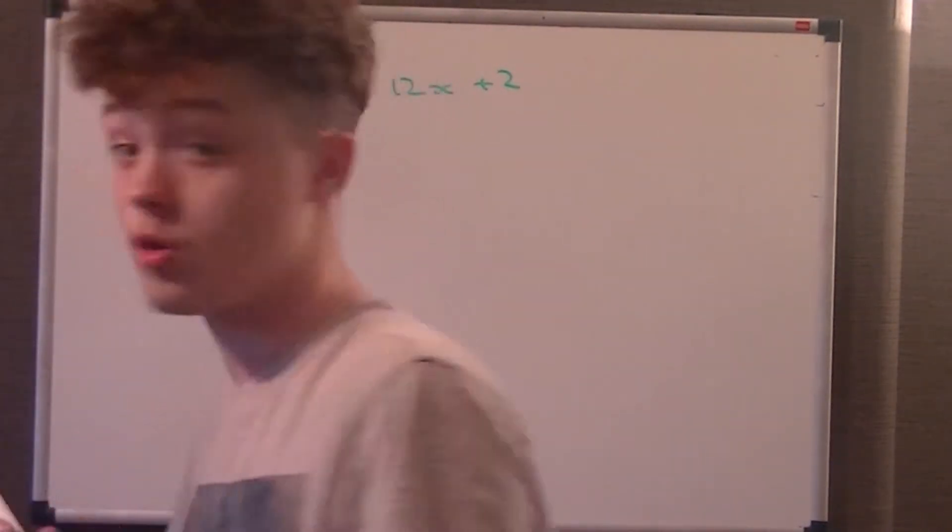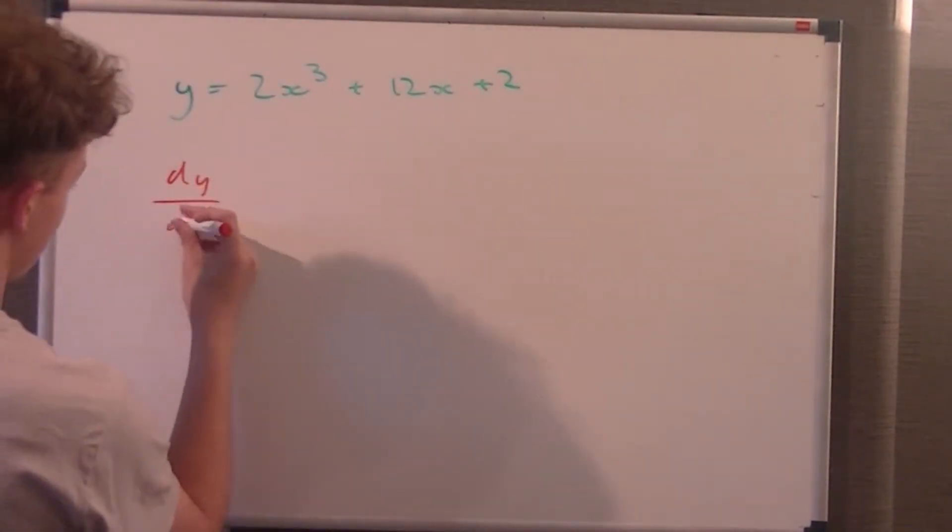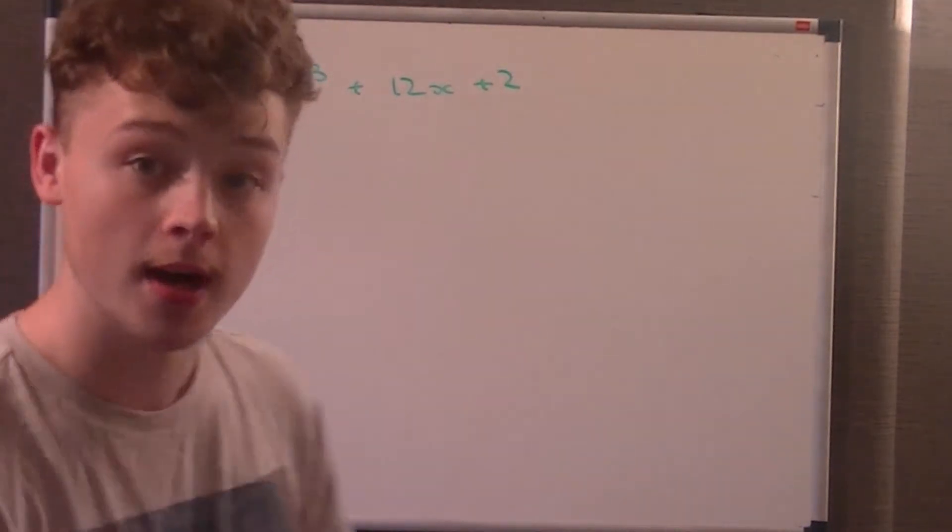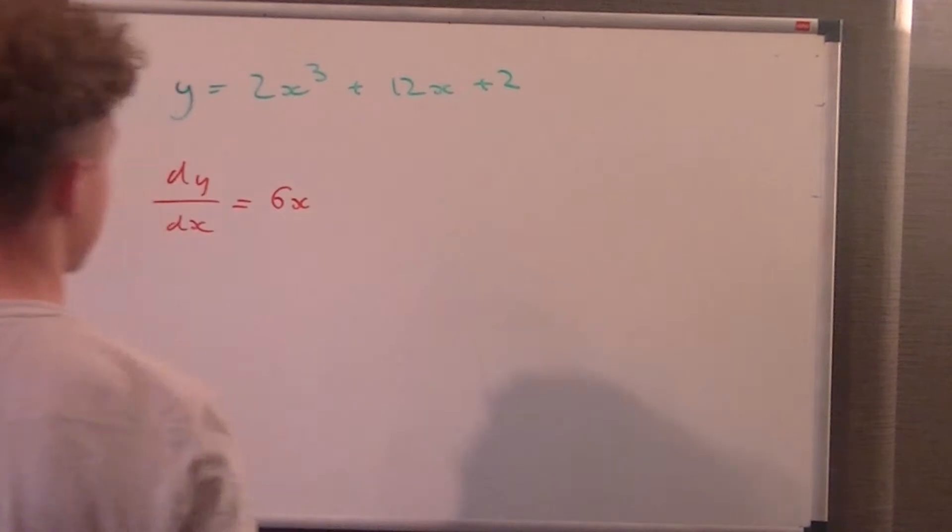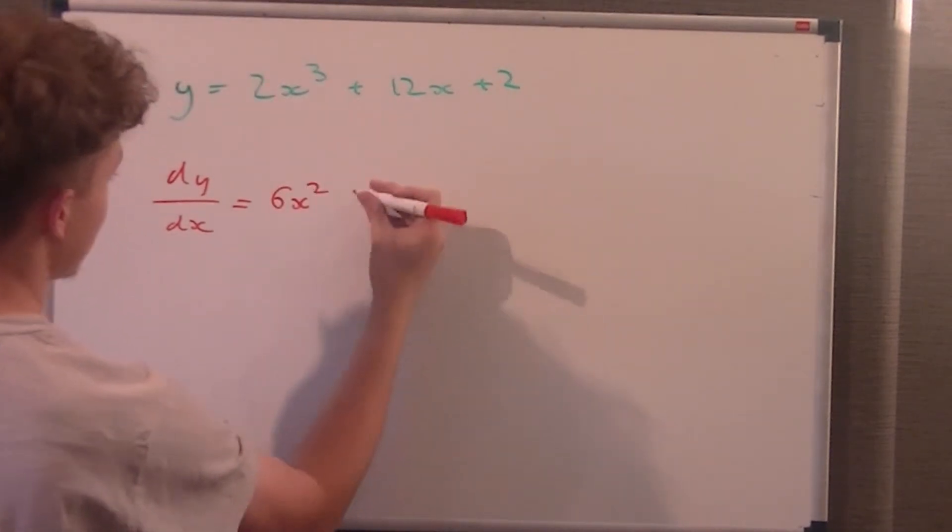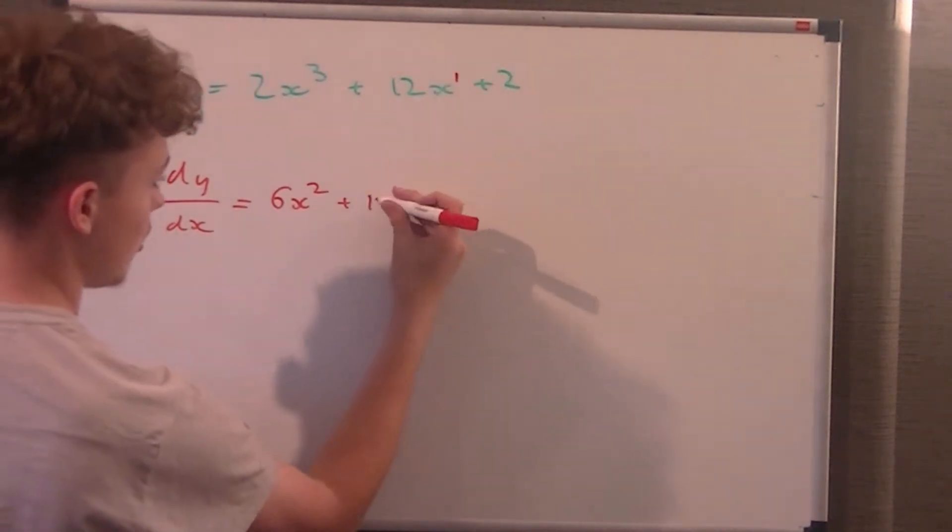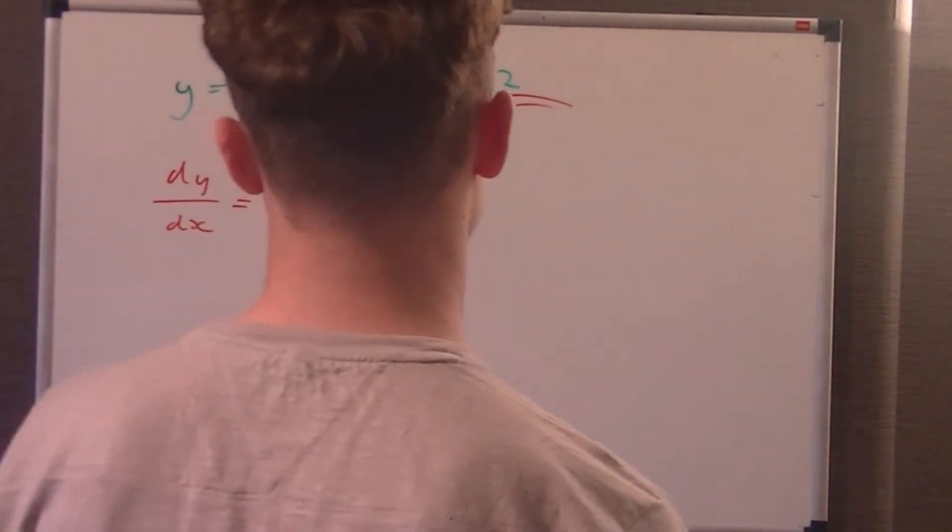We do dy/dx, so that's the formula you put in. What we do is we times the power by the coefficient, so 2x cubed, 3 times 2 is 6. We decrease the power by 1, so it becomes 6x squared. We follow this method on, so there's an invisible 1 here, so 12 times 1 is 12, and the x disappears. Because there's no x in the constant term, we leave that out, so it becomes 6x squared plus 12.